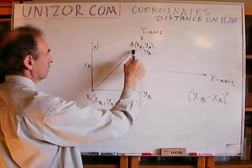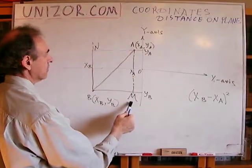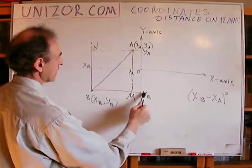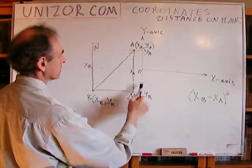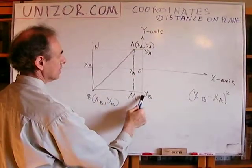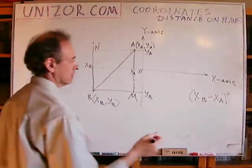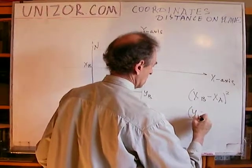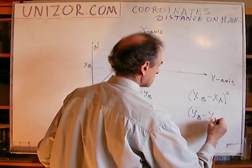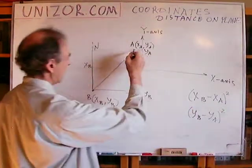Now, very similarly, what about the cathetus A, M? Well, since this cathetus is equal exactly the distance between y_a and y_b, then the square of the distance between A and M, or between y_a and y_b, is this.